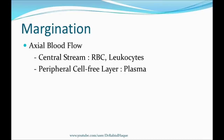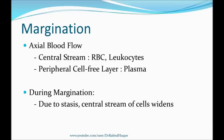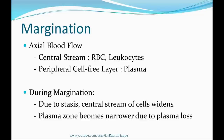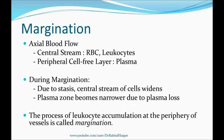During inflammation there will be stasis — blood flow becomes slow. Whenever blood flow becomes slower, the central stream of cells widens. At the same time, the peripheral cell-free plasma layer becomes narrower due to loss of plasma during inflammation. The combined effect — widening of the central stream and narrowing of the peripheral cell-free layer — results in margination: leukocytes accumulate at the periphery of the blood vessel.